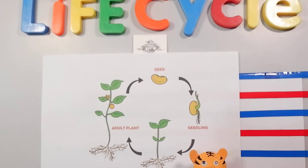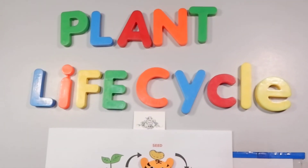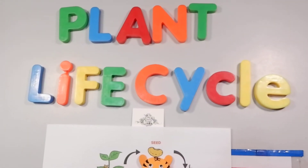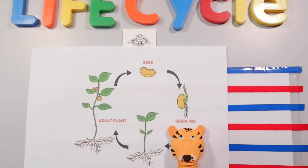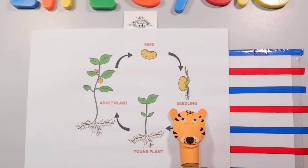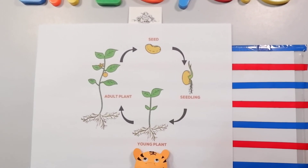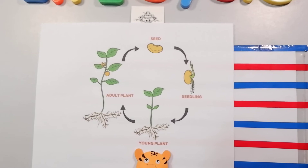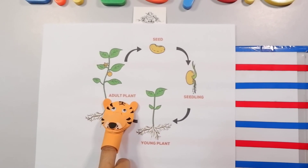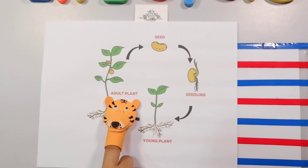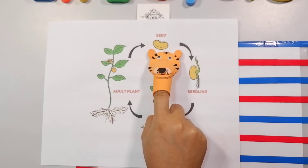So again, chameleons, remember: the seed turns into a seedling, and the seedling turns into a young plant, and the young plant turns into an adult plant in order to bear new seeds again.